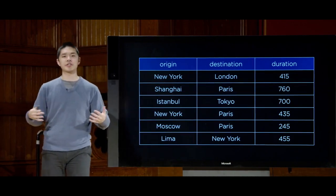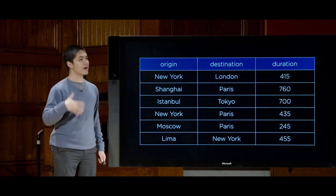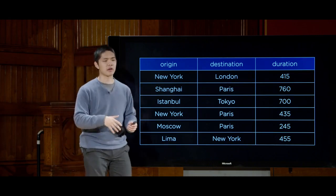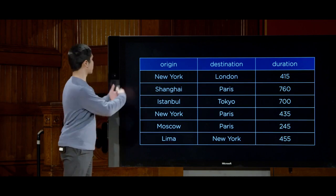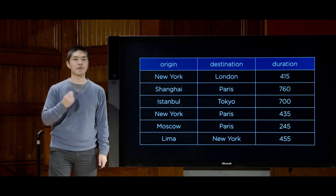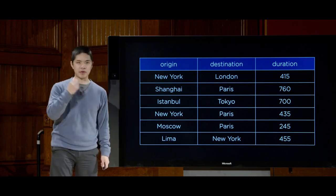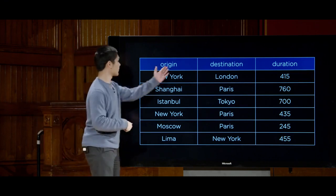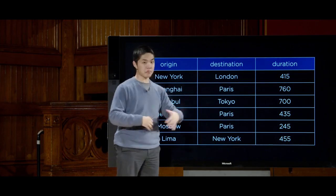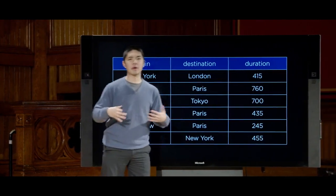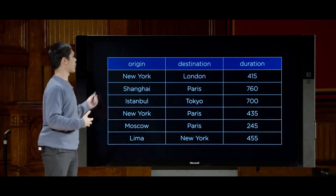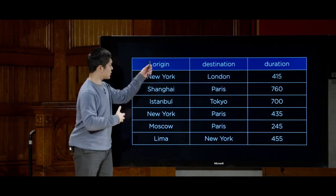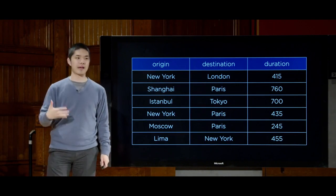For the sake of today, we're going to imagine constructing a database and a web application that an airline might use for keeping track of various different flights, and keeping track of which passengers are on those flights. Here is a sample table of how you might represent flight-related data. I have three columns: origin — what city the flight is leaving from; destination — what city it's arriving at; and duration — some value in minutes of how long the flight takes. Each column represents one field, and each row represents an individual flight.